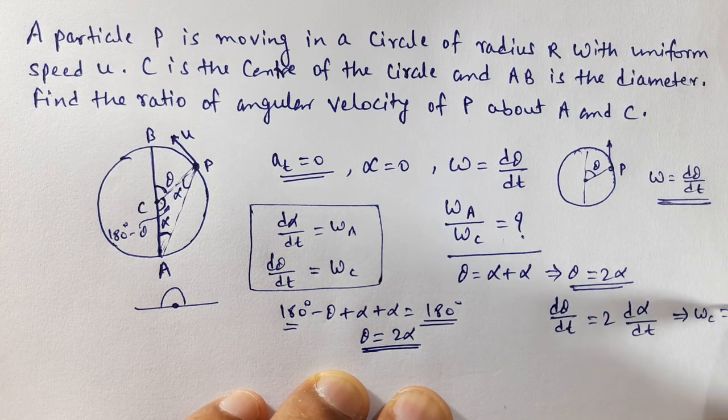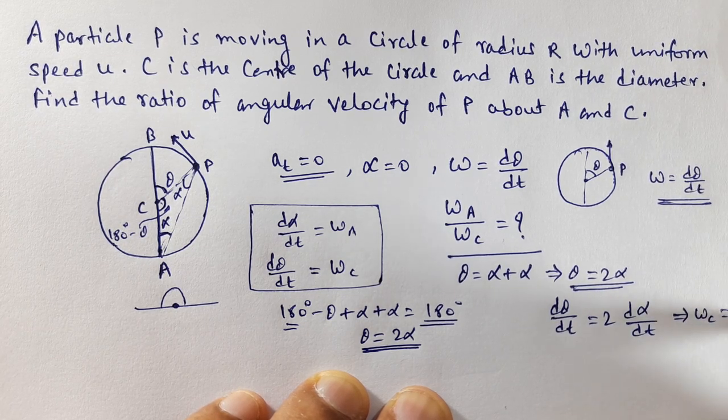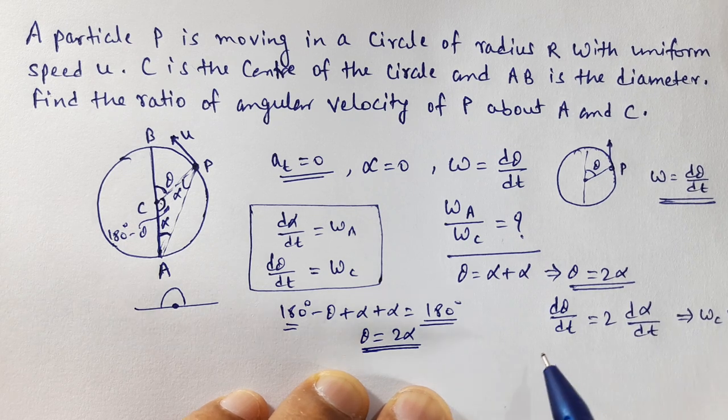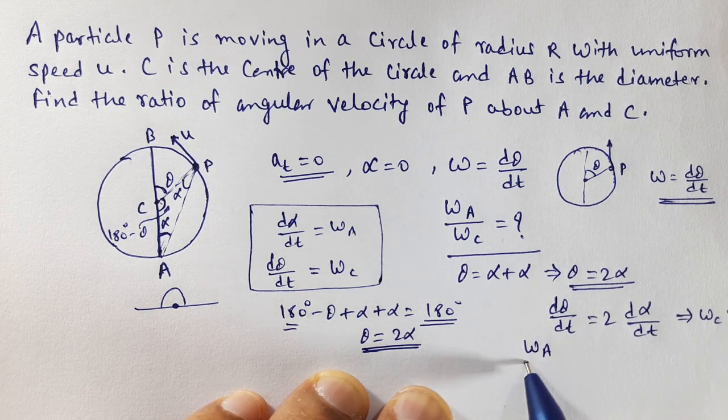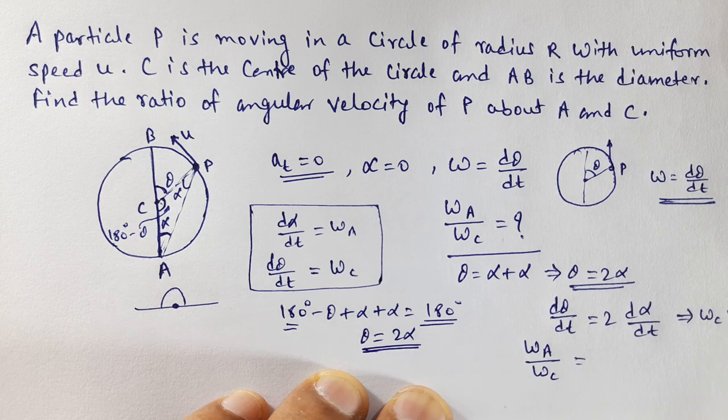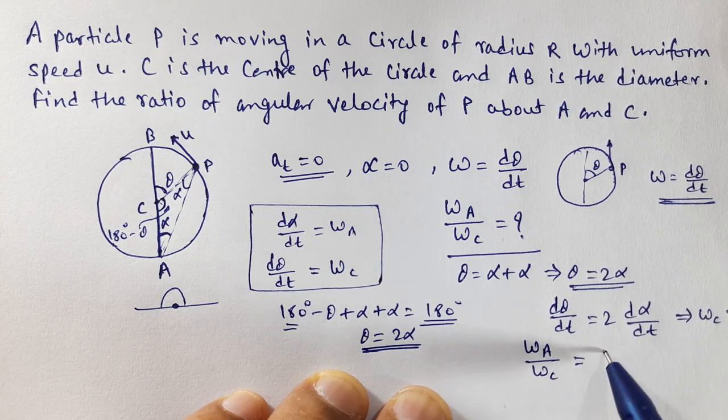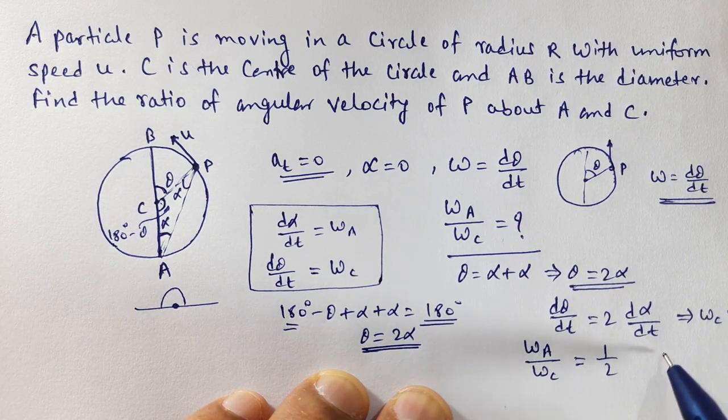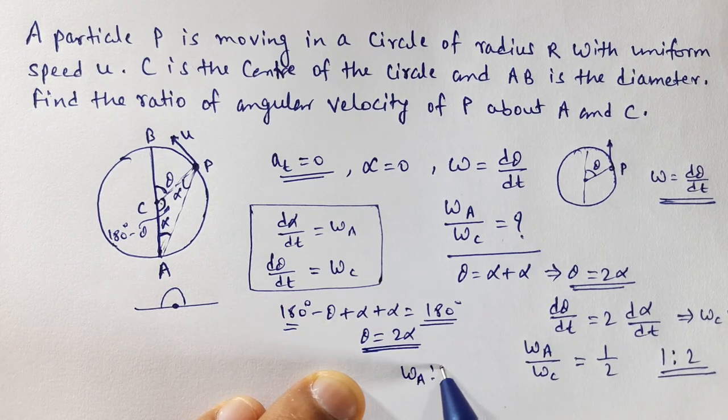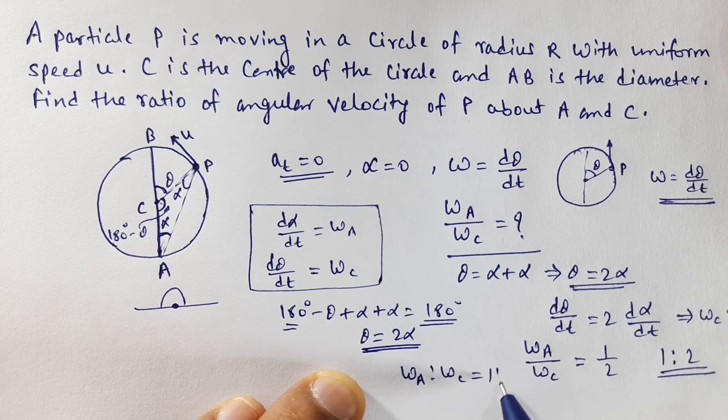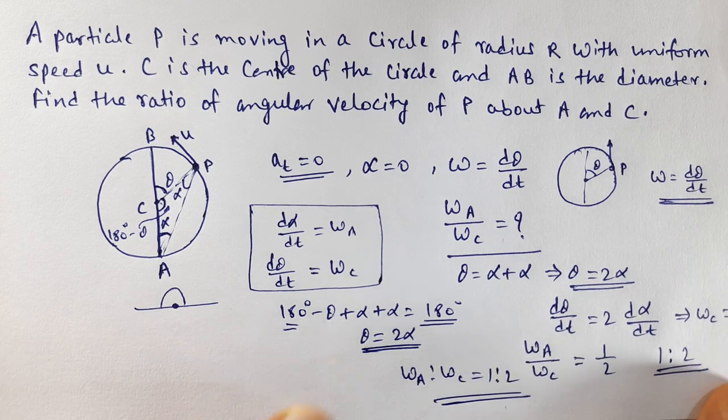So that is 2ωA. The ratio we need is ωA by ωC. ωA by ωC will be one by two. So the ratio of ωA to ωC is 1:2. That is the answer.